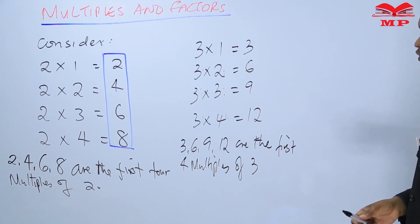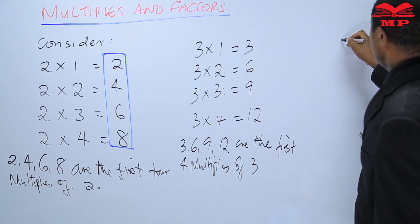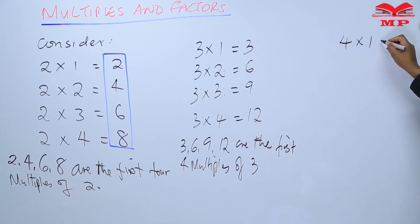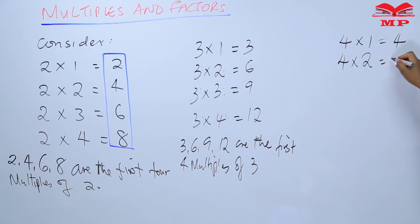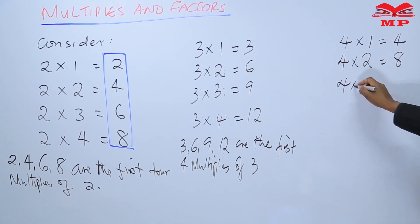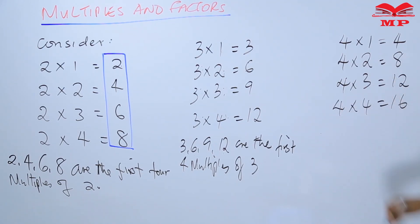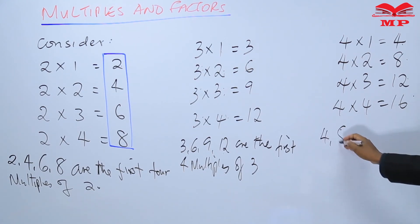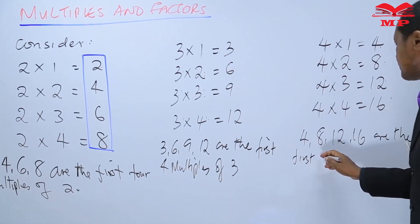Let's consider another example. Four times one gives us four, then four times two is equal to eight, four times three is equal to twelve, and four times four is equal to sixteen. So four, eight, twelve, and sixteen are the first four multiples of the number four.